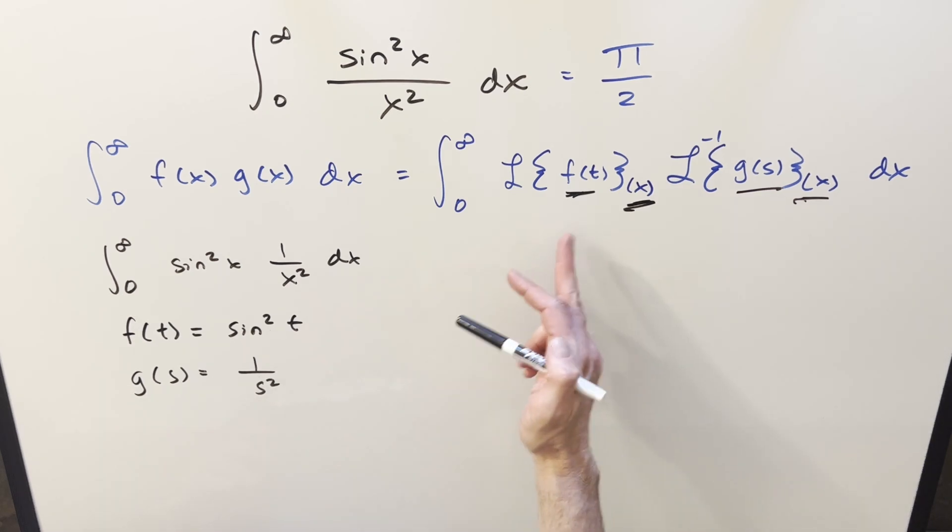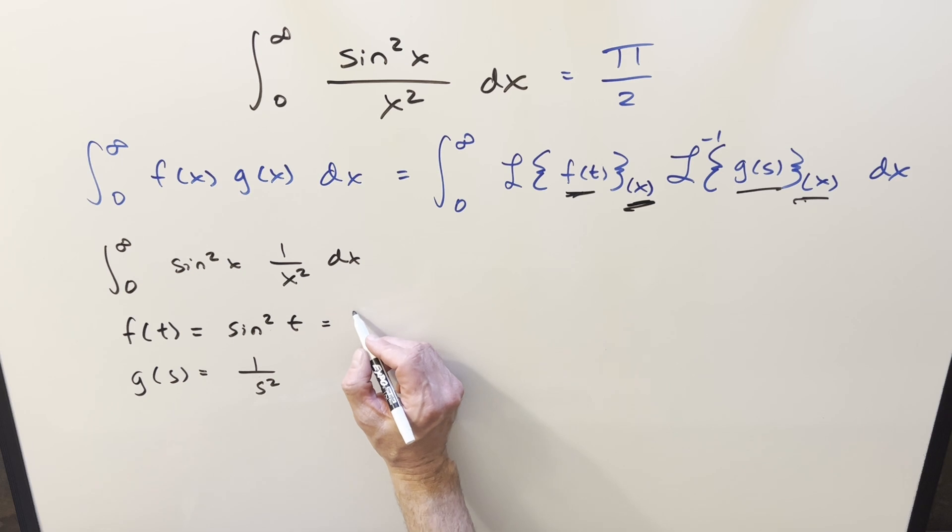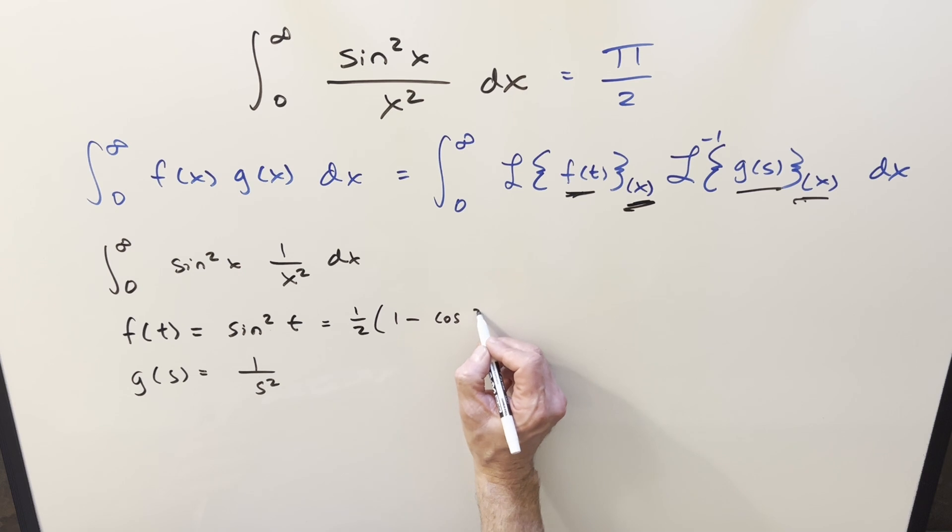But now before I plug this back in here, I'm actually going to transform it, because I don't really know how to get the Laplace transform of sine squared t. But what we can do is we can reduce the power using this formula, using this trig identity, we can write it as 1 half 1 minus cosine of 2t.